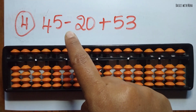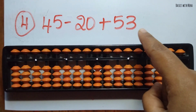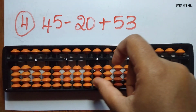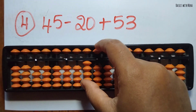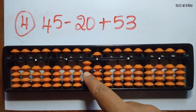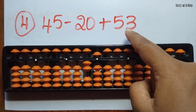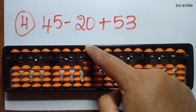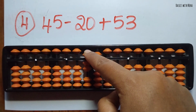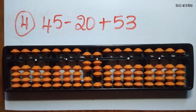The fourth question: 45 minus 20 plus 53. First take 45, now you can minus 20 — minus 2 in the 10's rod. Now you should add 53 — plus 5 in the 10's rod and plus 3 in the 1's rod. The answer is 78.